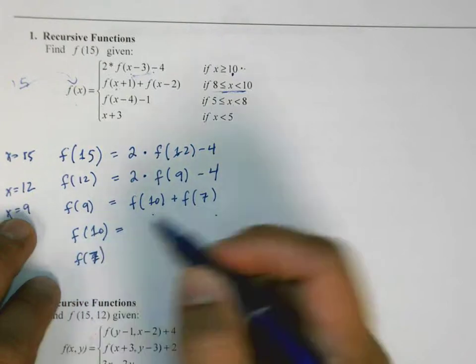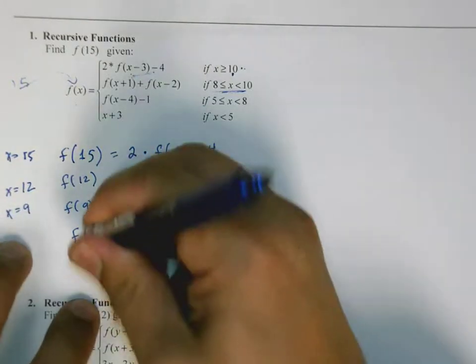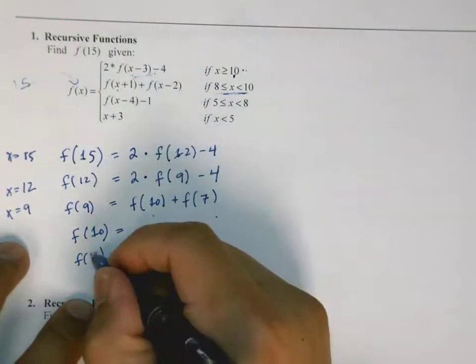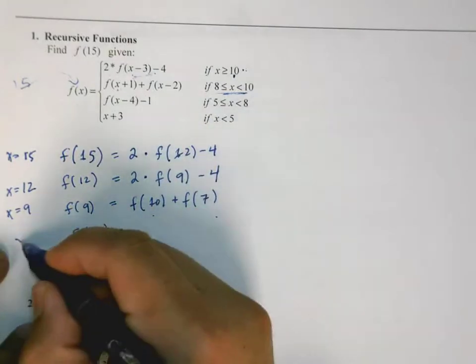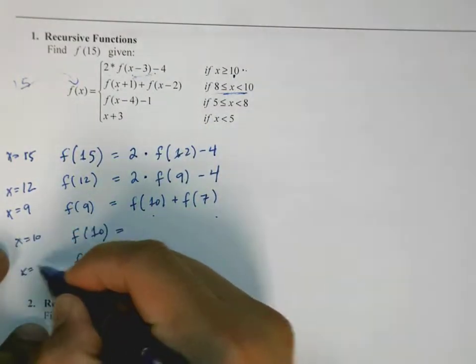So now I'm going to have to calculate each of these. So I'm going to have to find f of 10, and I'm also going to have to find f of 7. Let me make this better here. That's f of 7. Okay, so here x equals 10, here x equals 7.